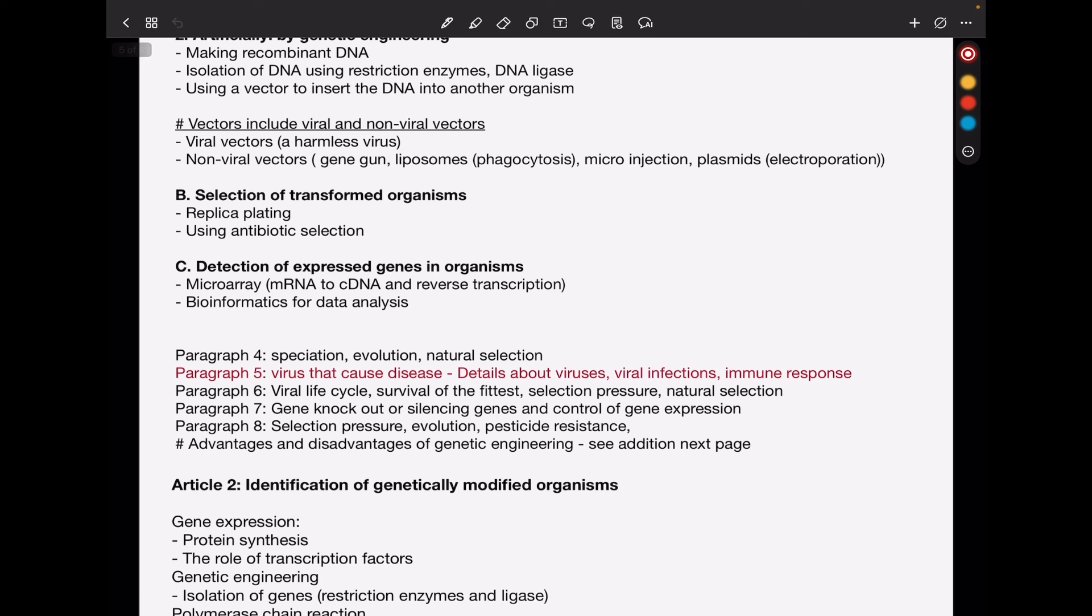And then the next part, they can ask about selection of transformed organisms. How can we know that the genes have been successfully inserted into the organism that was supposed to receive them? So in your textbook, they talk about replica plating, possibly using antibiotic resistance, as well as a specific nutrient that could enable or prevent the growth of certain organisms. So you can focus on methods of confirming if organisms have been transformed.